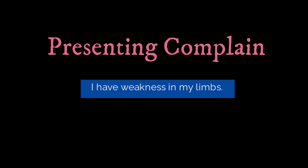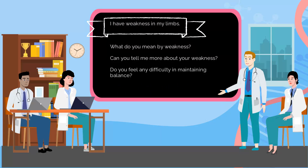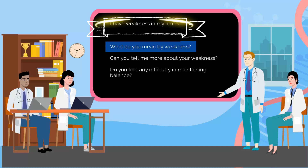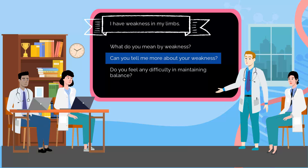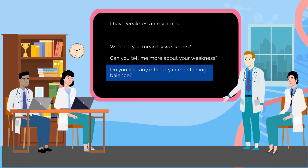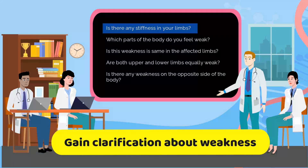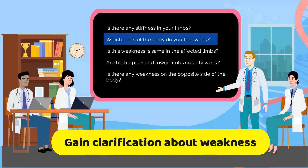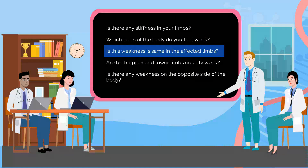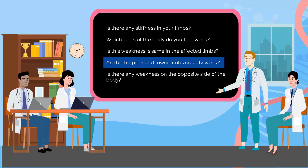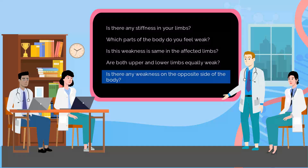The patient presents saying: 'I have weakness in my limbs.' Then ask the patient: What do you mean by weakness? Can you tell me more about your weakness? Do you feel any difficulty in maintaining balance? Is there any stiffness in your limbs? Which parts of the body do you feel weak? Is this weakness the same in the affected limbs? Are both upper and lower limbs equally weak? Is there any weakness on the opposite side of the body?